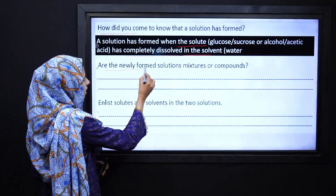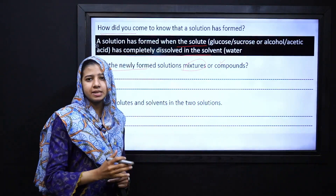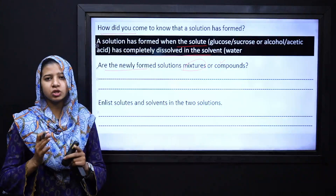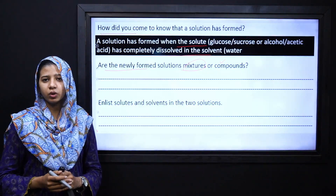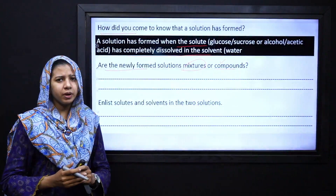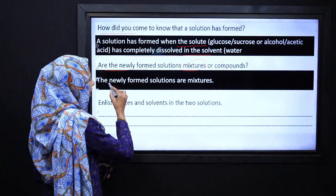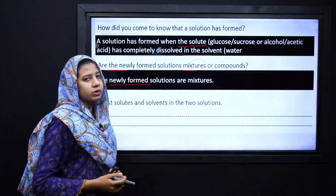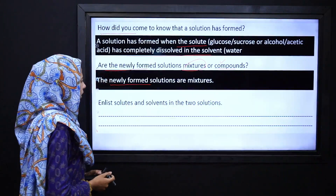Next question: is the newly formed solution a mixture or a compound? What is the basic difference between a mixture and a compound? A compound requires a fixed ratio. Since we do not add the solute in a fixed ratio and we only add a small amount of solute, the formed solution is a mixture, not a compound.